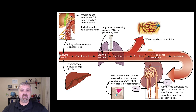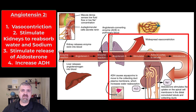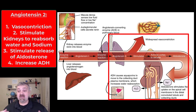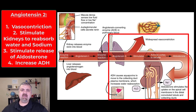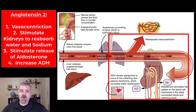Now let's talk about the key things that happen — this is really where most of the action occurs. First, angiotensin-2 leads to widespread vasoconstriction. Your blood vessels constrict for two reasons: it props blood pressure up by moving blood through smaller tubes, and it ensures more blood is available to flow to the kidneys. Second, angiotensin-2 stimulates the kidneys to reabsorb sodium chloride and water.